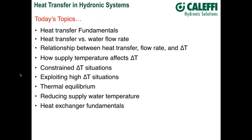We'll look at constrained delta T situations where a control device holds delta T at a constant value, and applications where that works. We'll also look at the advantages of high delta T — exploiting high delta T situations. High delta T, or a high temperature drop in a hydronic system, is analogous to high voltage in an electrical system.